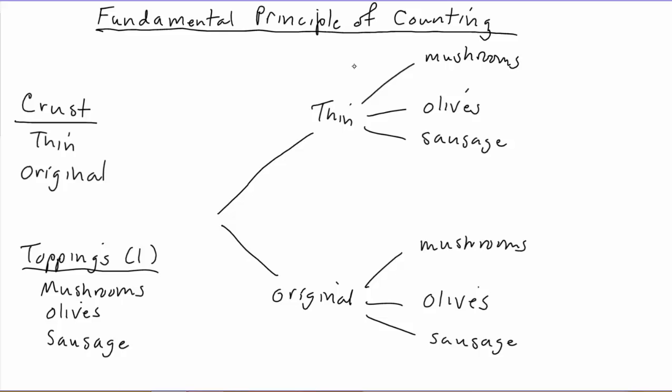This was fairly easy to list out, but in other problems this might be much more difficult. For types of crust, we might have had a much larger collection — suppose we had five different types. And for toppings, the list could have been far larger; what if we had 20 different possible toppings? This would be a much more cumbersome procedure to try to list all the different possibilities explicitly. So sometimes we want to know how to count the number of possibilities without listing them all out.